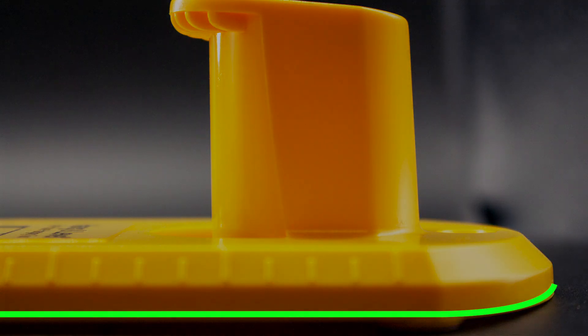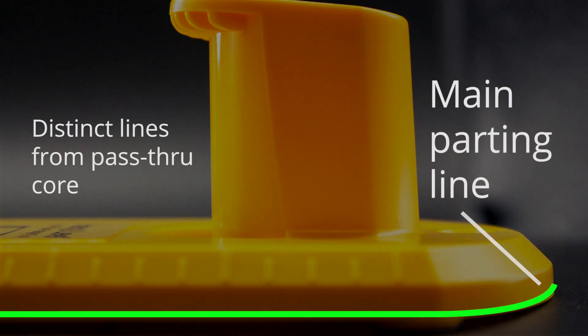In this case, the piece produced is using a two-part mold. There's a main parting line along the outside edge as well as distinct lines around each area where there was a pass-through core feature.